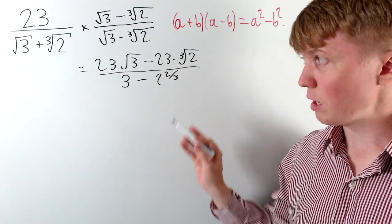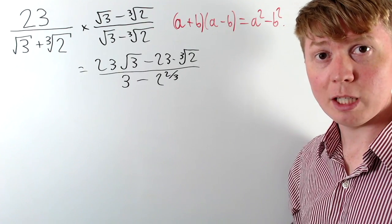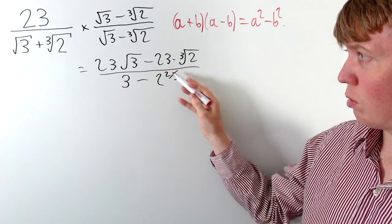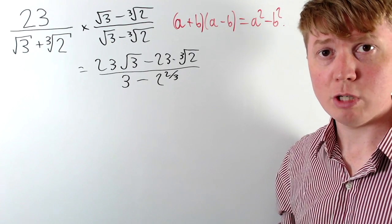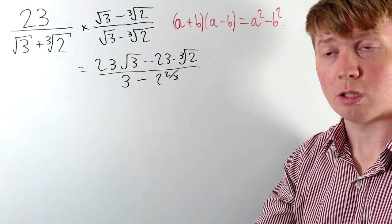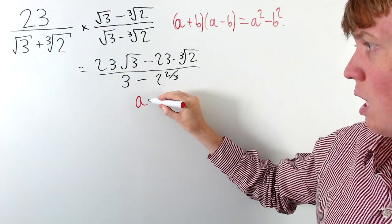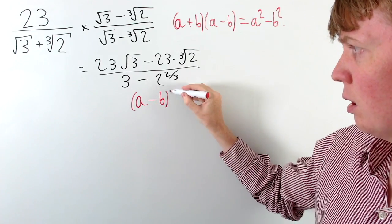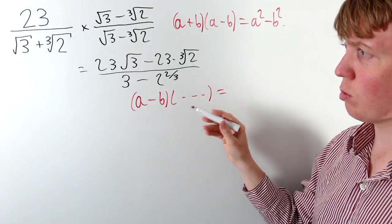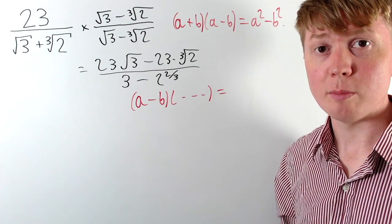We still need to deal with this 2 to the 2 thirds term. We'd quite like to apply a similar trick where we end up with 2 to the 2 thirds raised to the power of 3, and no other powers of 2 to the 2 thirds. So we're essentially looking for — because we've got a difference here — something where a minus b multiplied by something gives us 2 to the 2 thirds raised to the power of 3.